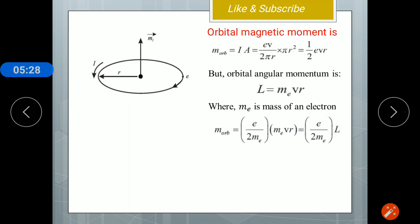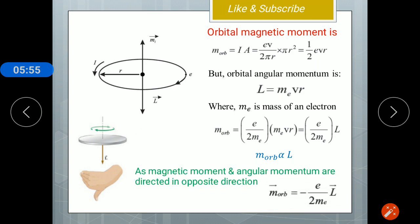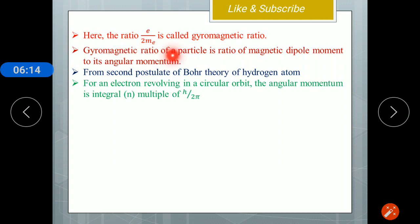Here e is the charge of the electron, which is constant, and m_e is the mass of the electron, also constant. So the orbital magnetic moment M_orbit is directly proportional to the angular momentum L. Since angular momentum is a vector quantity and its direction is defined by the right-hand thumb rule, and as the direction of the electron here is clockwise, the direction of angular momentum is downward. So the magnetic moment and angular momentum are in opposite directions. In vector form: M_orbit = −(e / 2m_e) × L⃗. The ratio e / 2m_e is called the gyromagnetic ratio, which is the ratio of the magnetic dipole moment to its angular momentum.